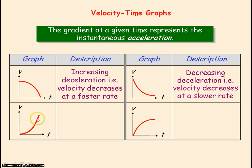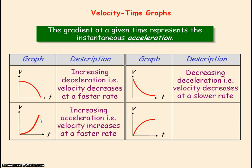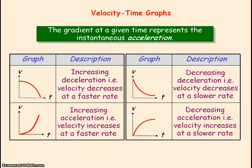For this graph, the gradient is positive, but as time increases, the gradient is increasing. So we have an increasing positive gradient, which is an increasing acceleration. For this final graph, you can see the gradient is positive, but as time increases, the gradient is decreasing. So we're having a decreasing positive gradient, which is a decreasing acceleration.